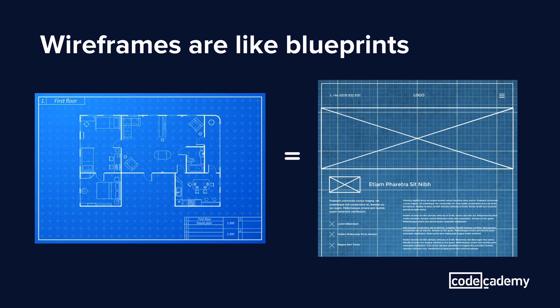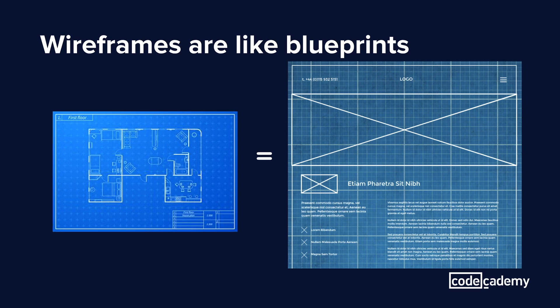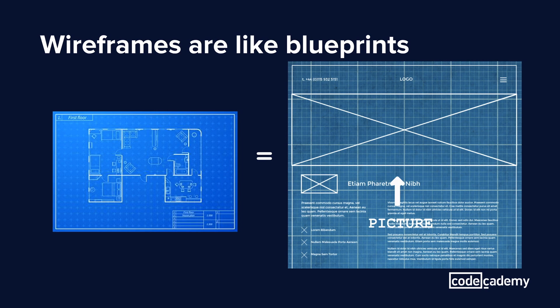A very common analogy is to compare wireframes to blueprints. Here on the left we have a blueprint of a house that describes how the first floor should be laid out, and similarly on the right we have a sample wireframe for a website that shows how the designer wants the website to be laid out. There's a phone number, logo, and menu at the top, followed by a picture underneath, and then the layout of the content after that.